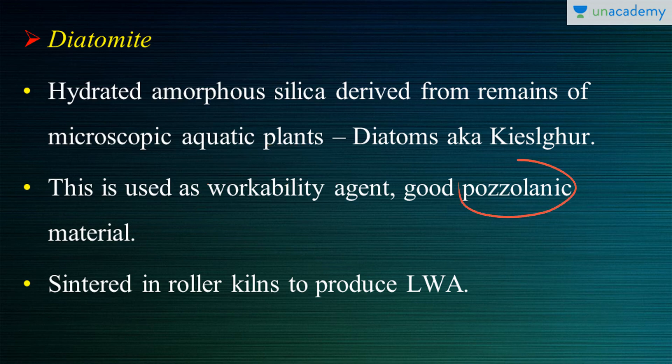The only problem with diatomite is availability — it's not much widely available in nature. These are sintered in roller kilns to produce the lightweight aggregates. Hence, the lightweight aggregates are formed and used in the lightweight concrete.